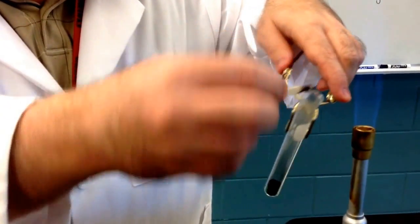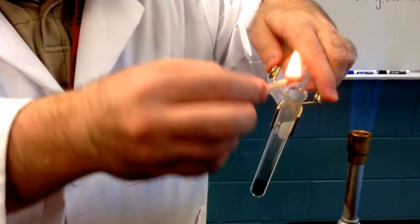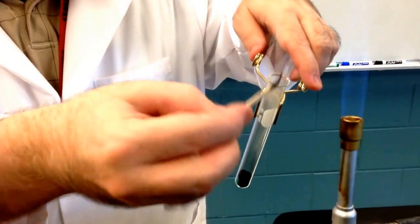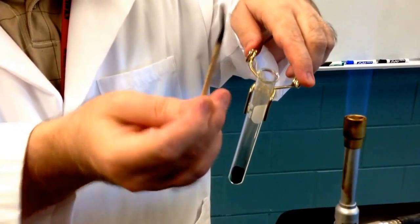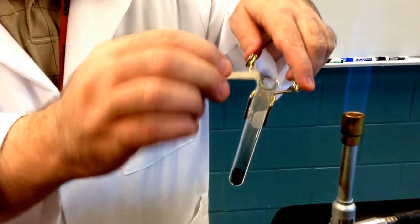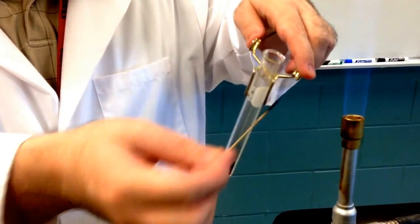And indeed it does go out. And I'm not sure if you noticed, but the flame actually turned a little green. And that's because some copper actually got on the wooden splint and the copper will burn green. So if that happens, that's normal.